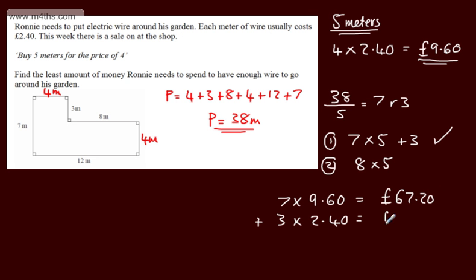On the next one, we got 3 lots of £2.40 which is going to give me £7.20. So all we need to do is add these two up and we can write that the total is going to be £74.40.